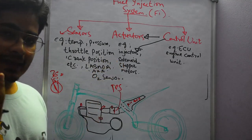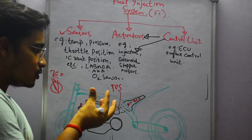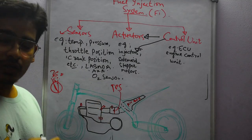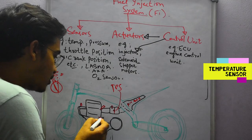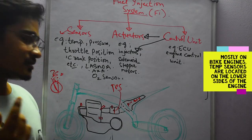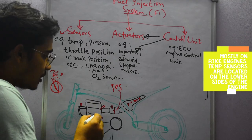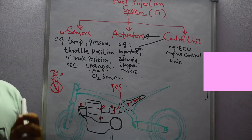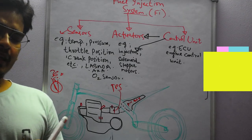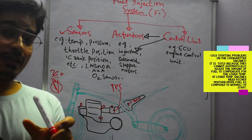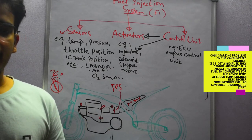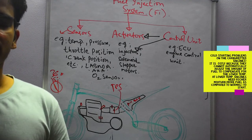The next important sensor is the temperature sensor, located on the engine head. Some engines have multiple temperature sensors at different positions, but on most bikes you'll find a single sensor on the lower side of the engine. It continuously monitors the engine head temperature. This is required because of cold starting problems — in carbureted engines there used to be a choke. When you try to start a cold engine normally it won't start, so you have to pull the choke.